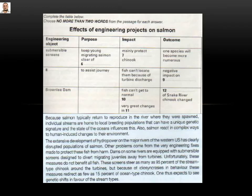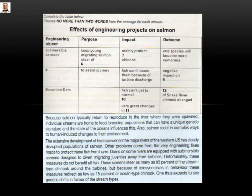Let's go to number seven: 'mainly protect...' Unfortunately, these measures do not benefit all fish. These screens steer as many as 95 percent of the stream-type chinook. So 'mainly protect' — 95 percent is a main thing — stream-type chinook. Because sometimes they don't give you the precise word; they give you a percentage, which means 'mainly.' Gap chinook — so the answer will be 'stream type.' Now we've found six and seven, so we move immediately to another paragraph.